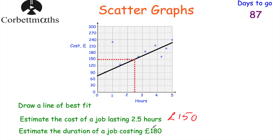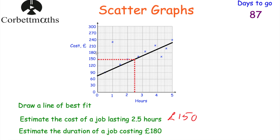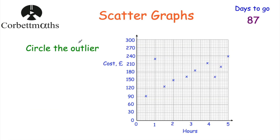The next part asks: estimate the duration of a job that costs £180. This time you go to £180 on the y-axis, go across to the line of best fit, then come down — and we land in the middle of three and four hours, which is 3.5 hours. So the estimated duration of a job costing £180 is three and a half hours.